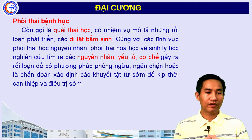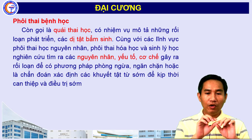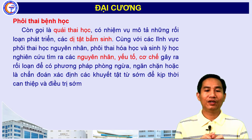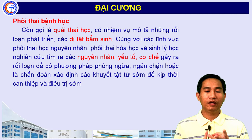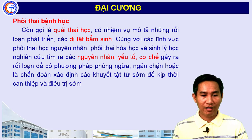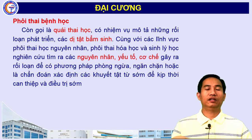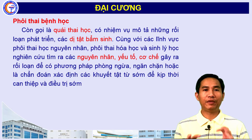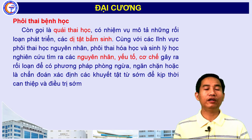Phôi thai bệnh học, hay còn gọi là quái thai học, có nhiệm vụ mô tả những rối loạn phát triển hình thái, hay còn gọi là những dị tật bẩm sinh của phôi thai. Cùng với các lĩnh vực phôi thai học nguyên nhân, hóa học và sinh lý học, sẽ nghiên cứu tìm ra những nguyên nhân, yếu tố, cơ chế gây ra các dị tật bẩm sinh để giới y học có thể phòng ngừa, ngăn chặn, chẩn đoán xác định các dị tật sớm và kịp thời can thiệp.